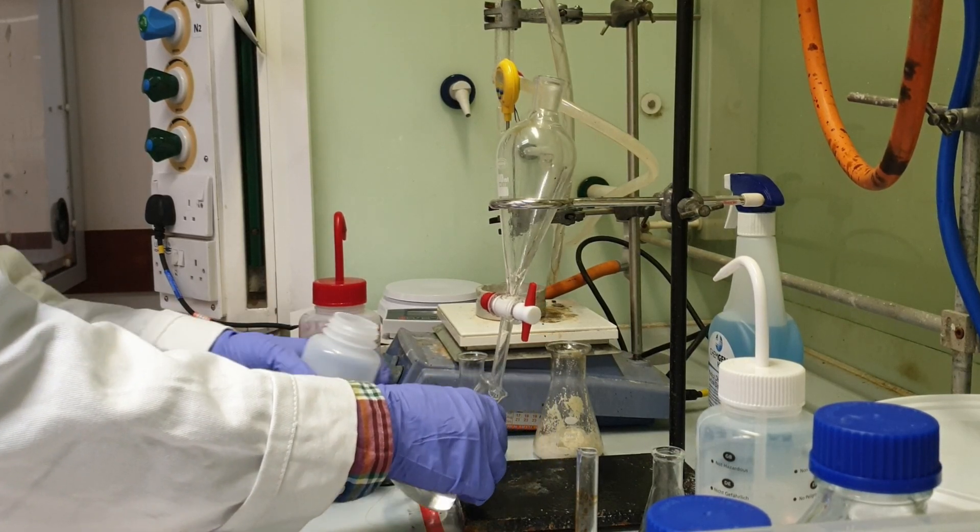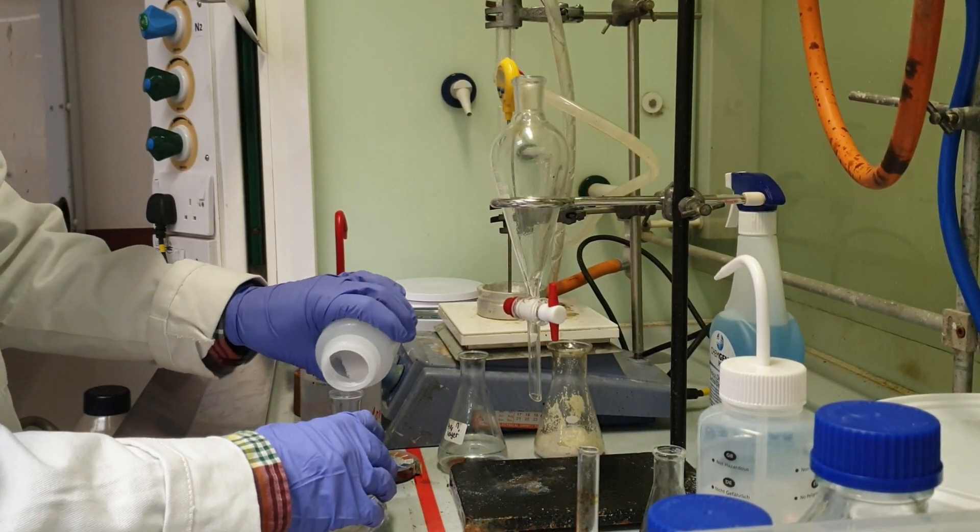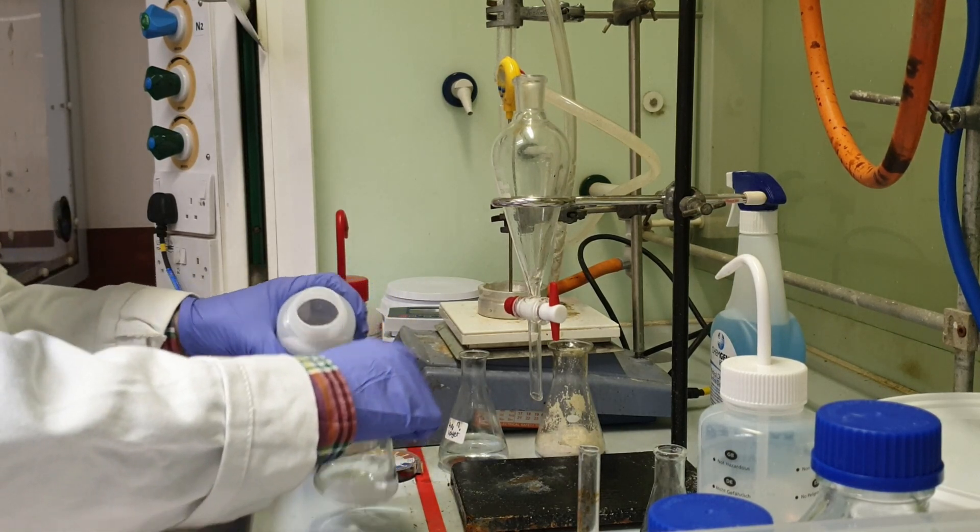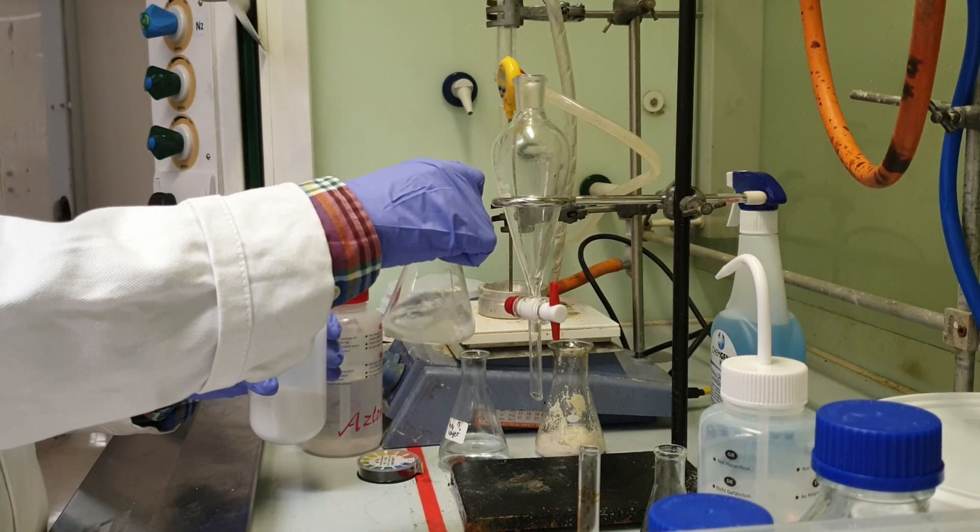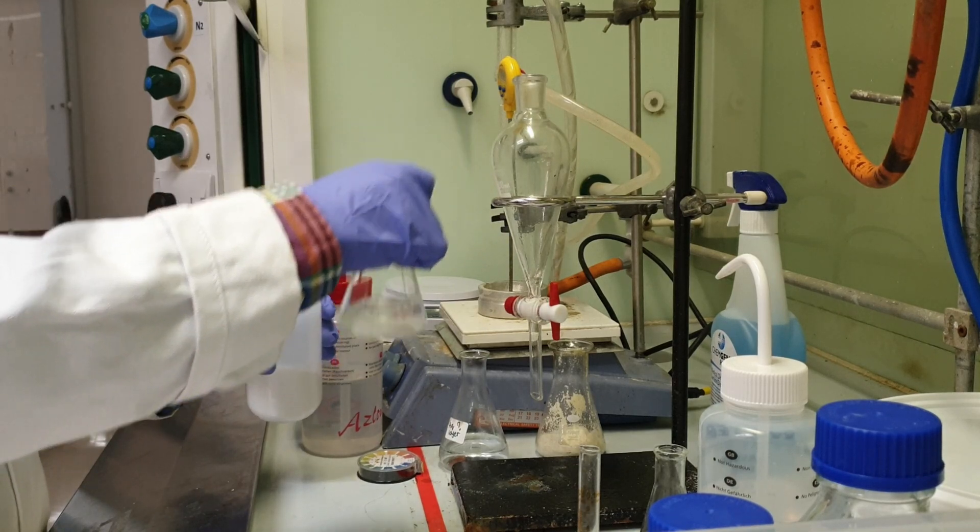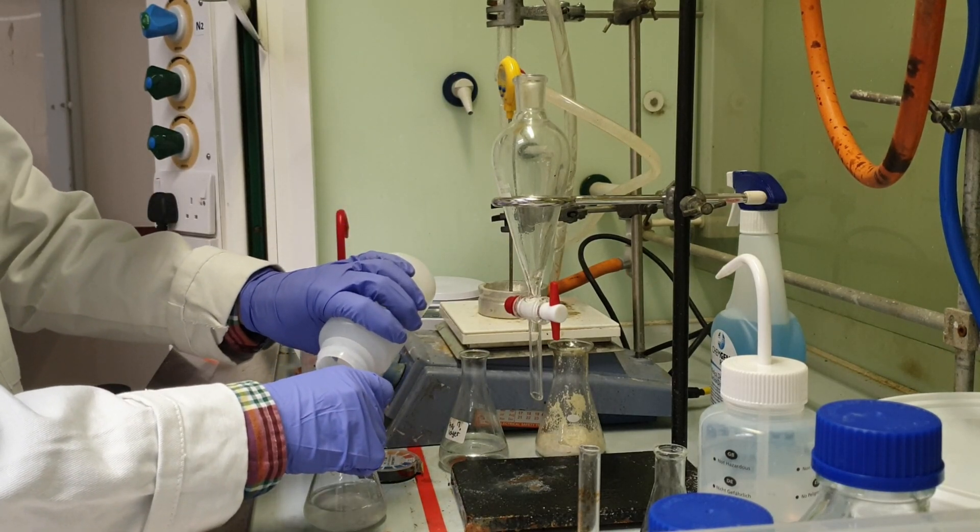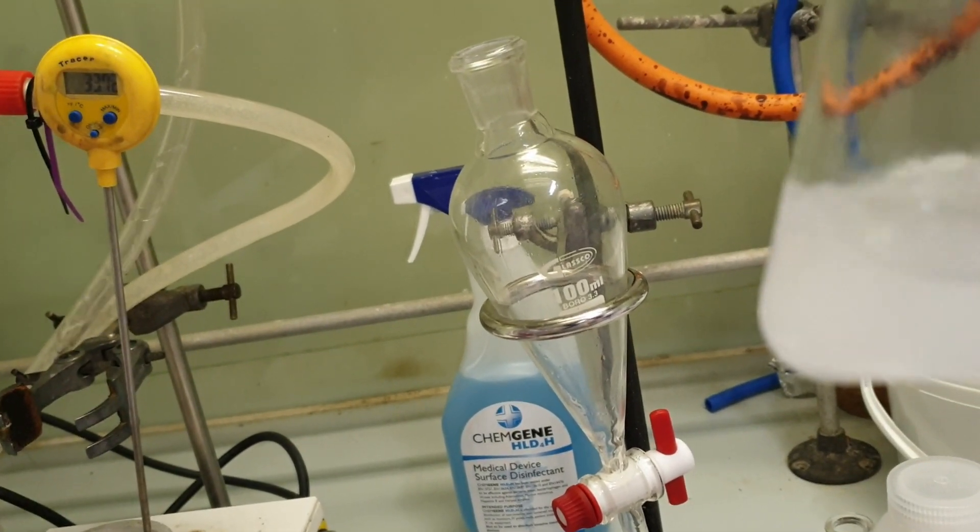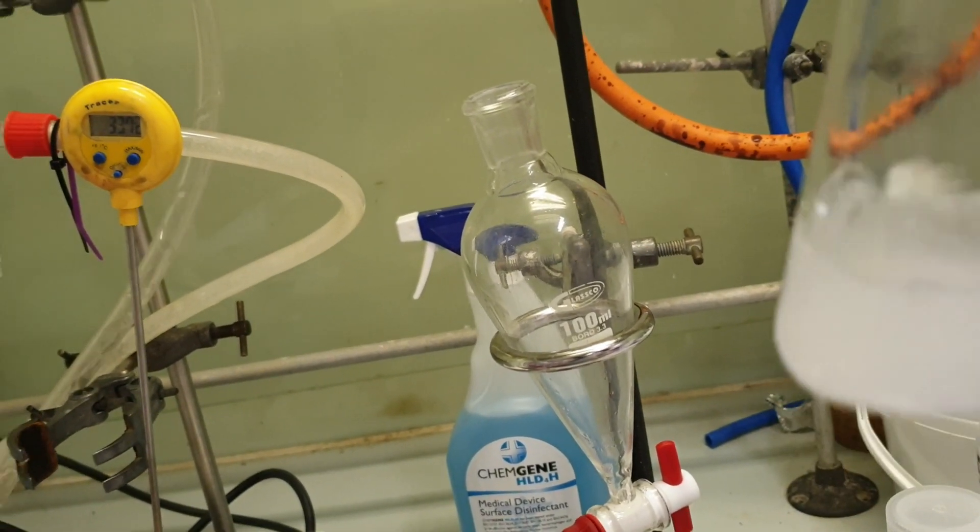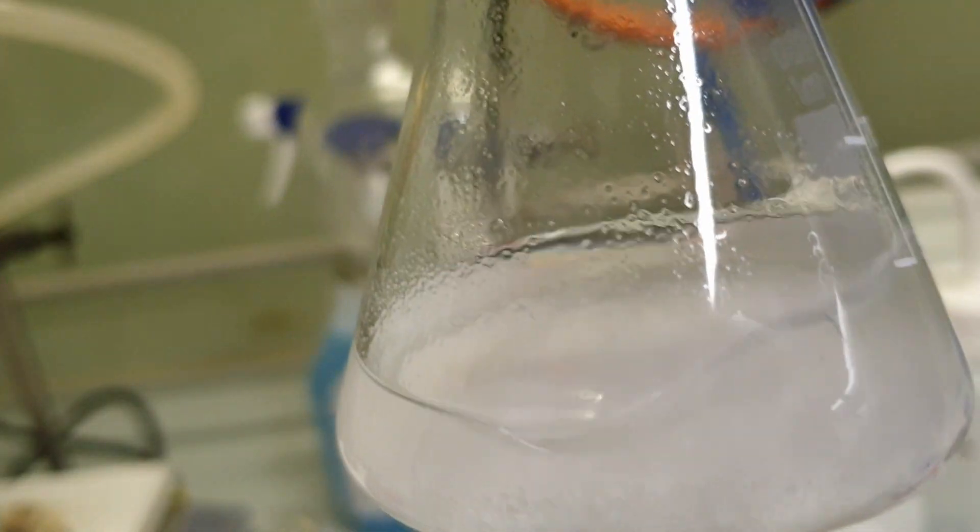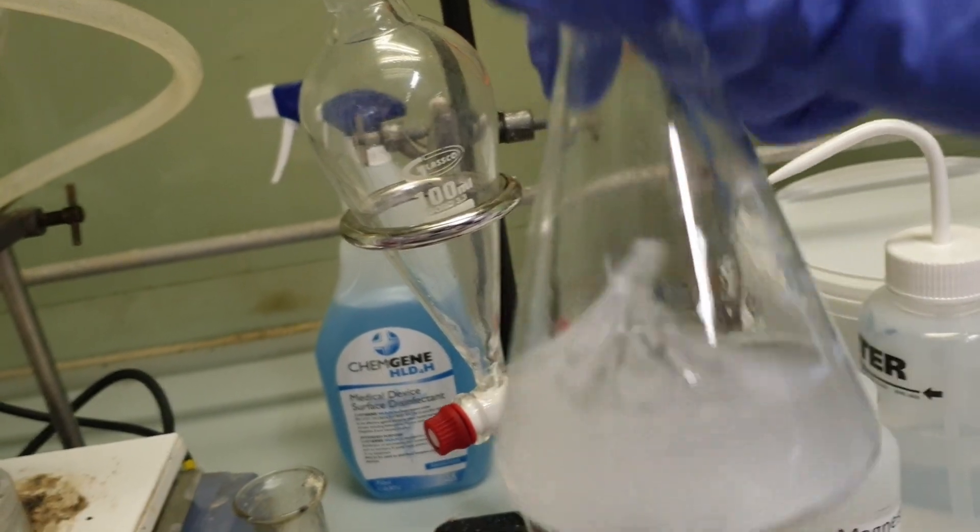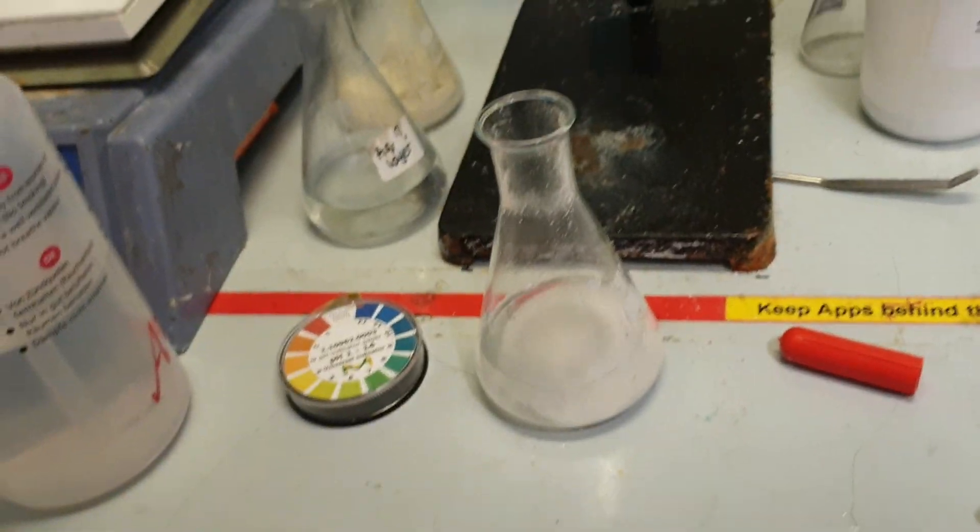Here I am adding anhydrous magnesium sulfate to my now neutralized organic layer. This will absorb water, any remaining water from the organic layer. This is dry now because when I swirl it, it goes cloudy but that means that not all of the magnesium sulfate has clumped at the bottom. So that's good to go. Just need to gravity filter this now.